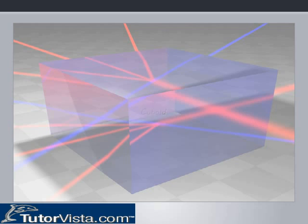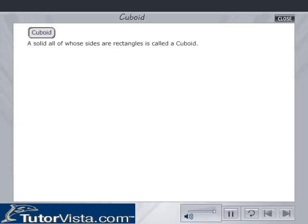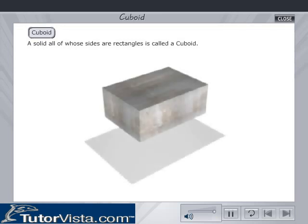Cuboid. A solid all of whose sides are rectangles is called a cuboid.